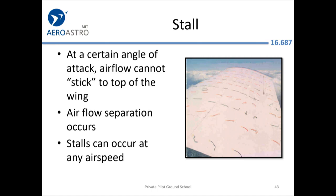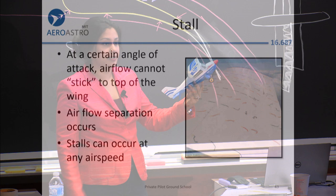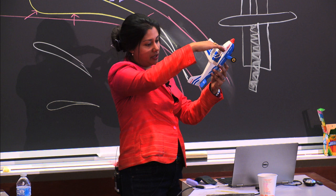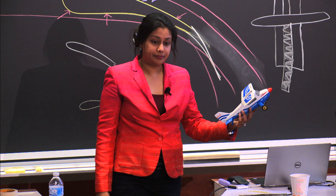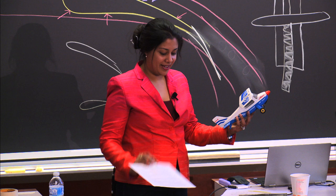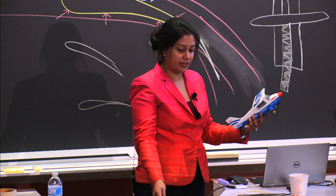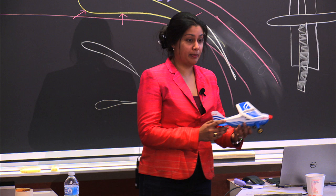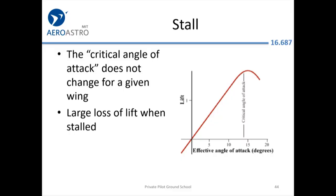When you have your angle of attack past the critical angle of attack, it can cause the air to no longer flow over the top and no longer effectively deflect air down. The air separates and you stall. It's important to know you can stall at any airspeed — even with full power. In fact, one of the maneuvers you'll have to do for your pilot's license is a power-on stall. Once the angle of attack is too steep, there is a very significant loss of lift, which is not good when you're flying an airplane.